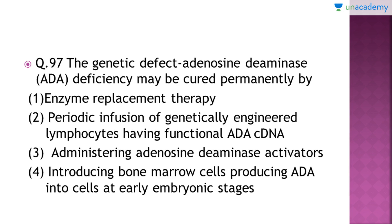We start with question number 97: 'The genetic defect adenosine deaminase (ADA) deficiency may be cured permanently by which of the following?' The right answer for this question is option number 4.